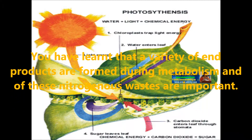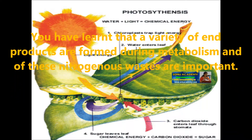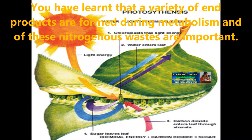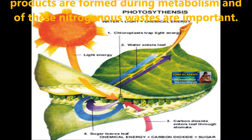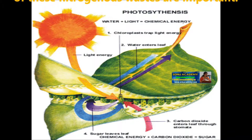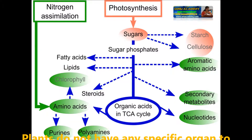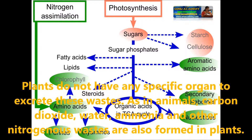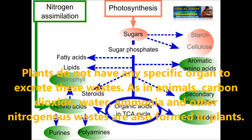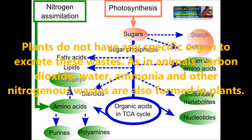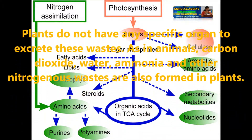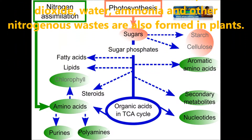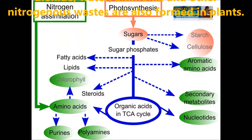Children, you have learnt that a variety of end products are formed during metabolism, and of these, nitrogenous wastes are very important. Plants do not have any specific organ to excrete these wastes. As in animals, carbon dioxide, water, ammonia and other nitrogenous wastes are also formed in plants.